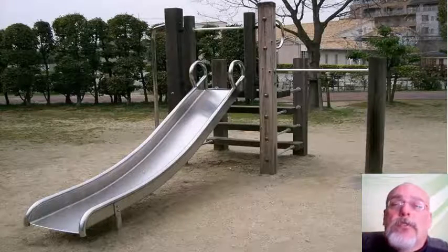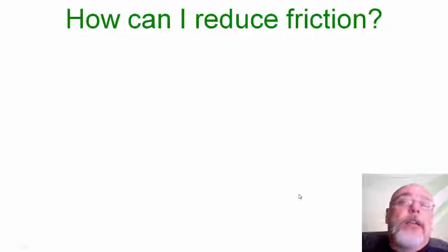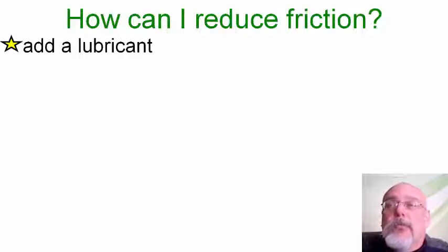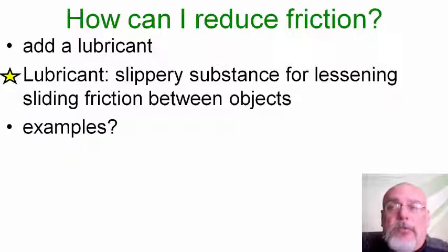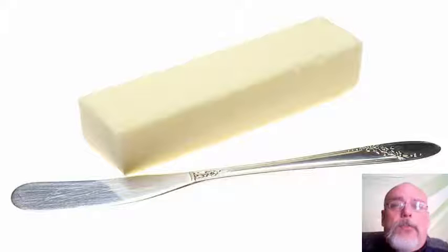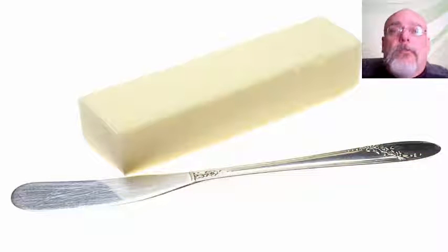So you want to decrease friction to have a very fast and thrilling slide ride. One of the ways you can reduce friction is to add a lubricant. A lubricant is defined as a slippery substance used for lessening sliding friction between objects. Some examples: if you've ever surfed, you could use surf wax — that will add a lubricant between the surfboard and the waves. Another lubricant could be oil or fat, like butter.